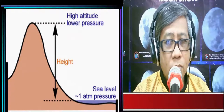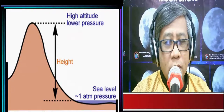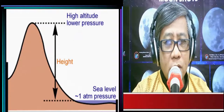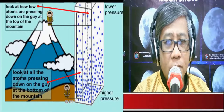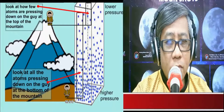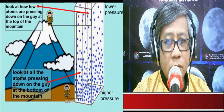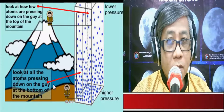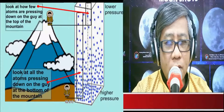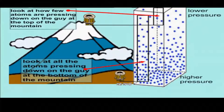This has to do with the molecules of air. Air molecules are pulled down by gravity, and near the surface of the earth the air becomes denser, which is equivalent to higher air pressure. The guy near the base of the mountain has more atoms and more molecules pressing down on him, so he experiences higher air pressure.